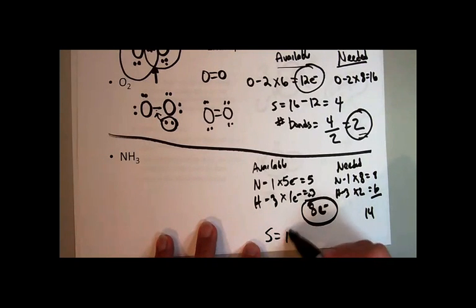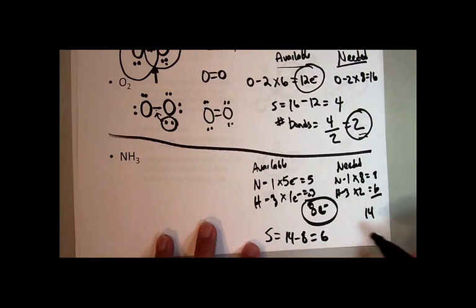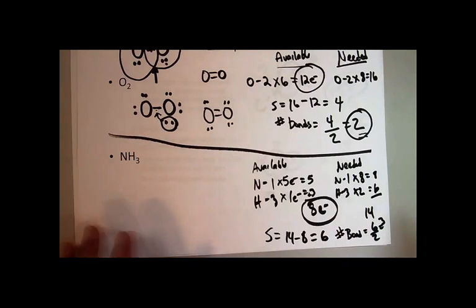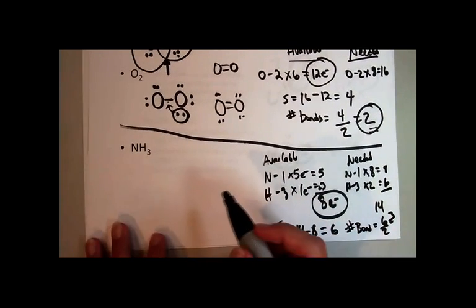S equals 14 minus eight equals six. That's the shared electrons, individual electrons. But to figure the number of bonds, since there's two electrons per bond, it's going to be six divided by two, which is three. So in this particular case, I'm predicting three bonds.